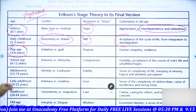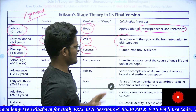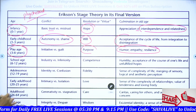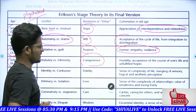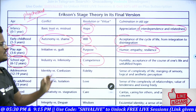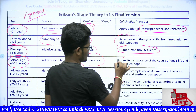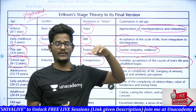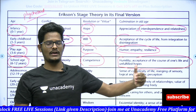The play age, three to six years, involves initiative versus guilt as the conflict, with purpose as the virtue. Next, school age is six to twelve years — industry versus inferiority — with competence as the virtue. Humility means acceptance of the course of one's life and unfulfilled hopes, accepting whatever is happening in life, because not everything can be fulfilled at once; it is completed over a lifetime.